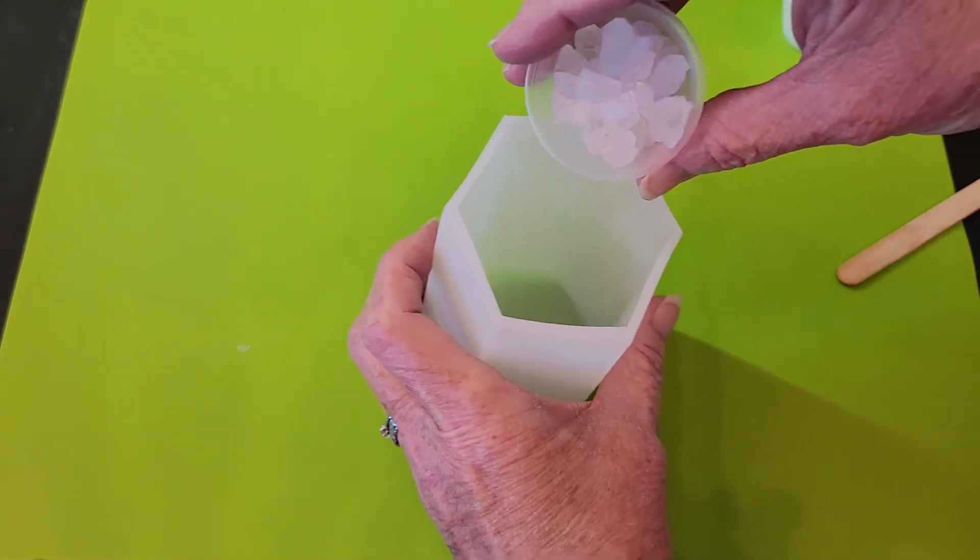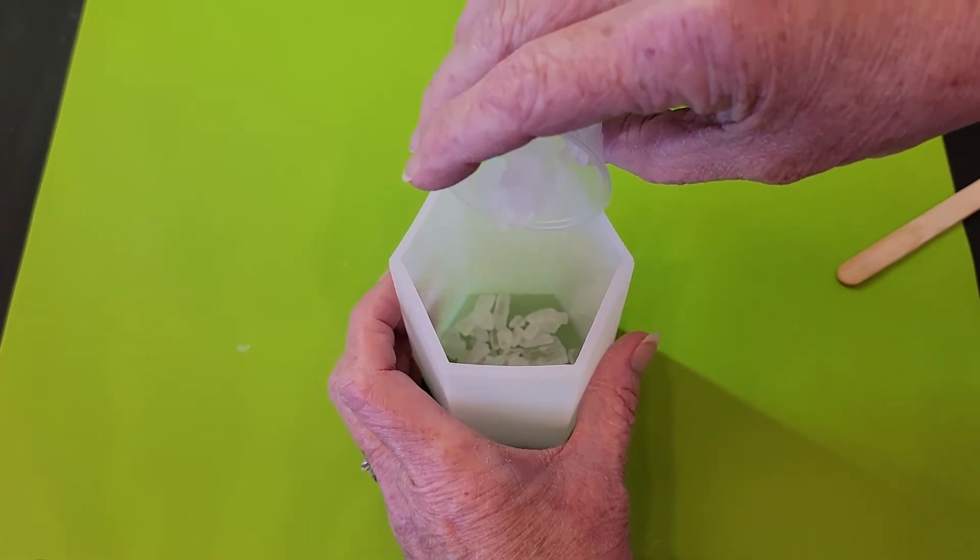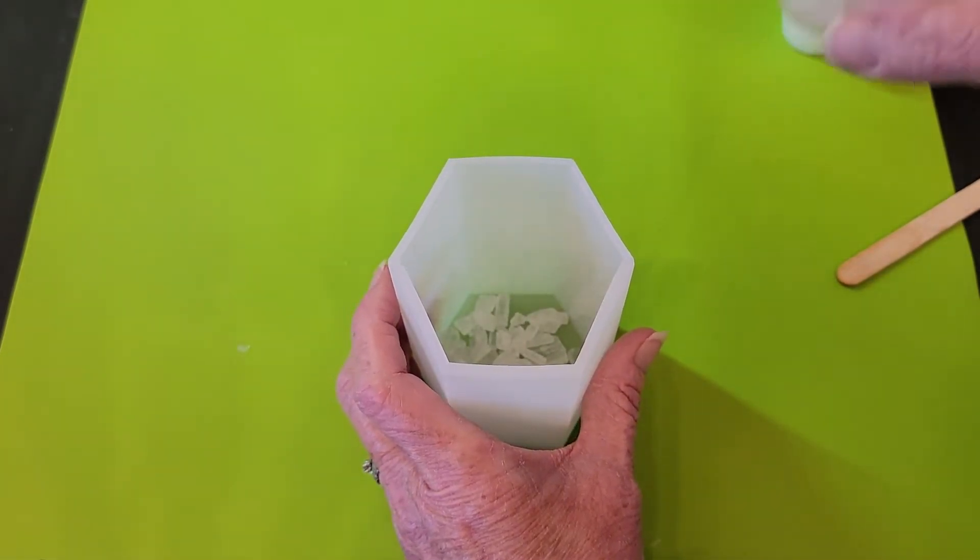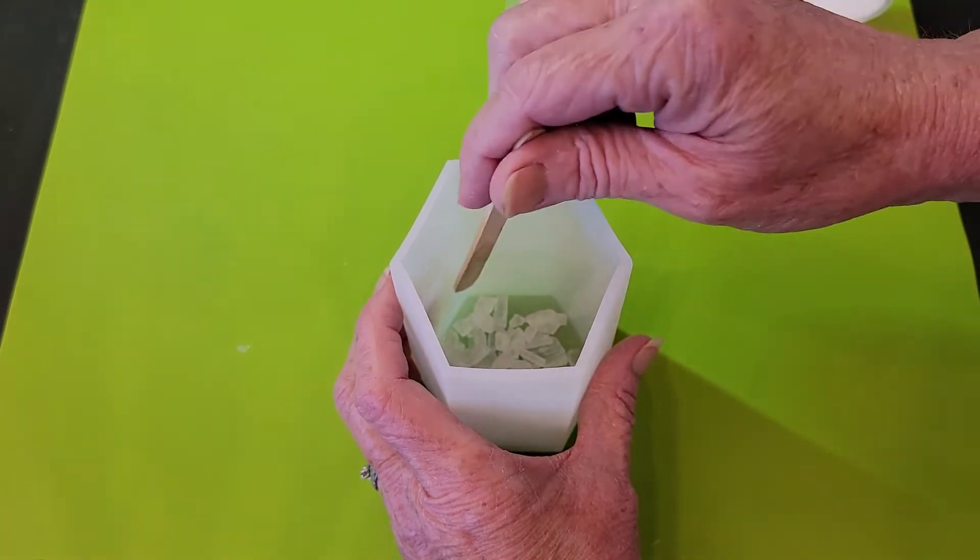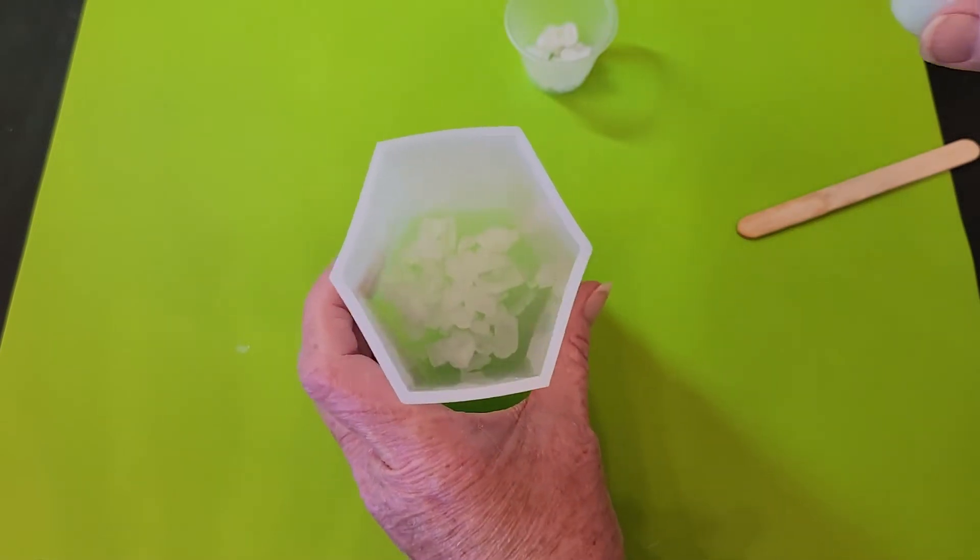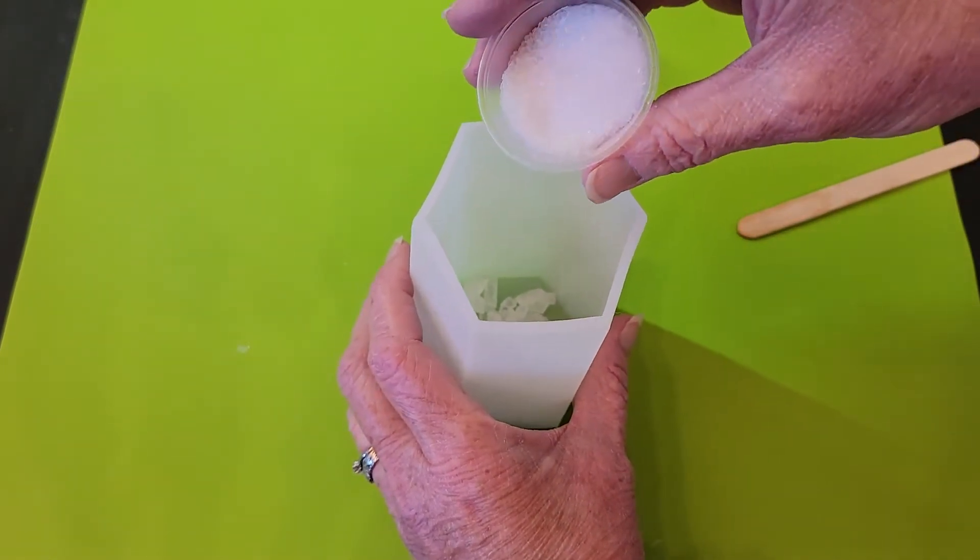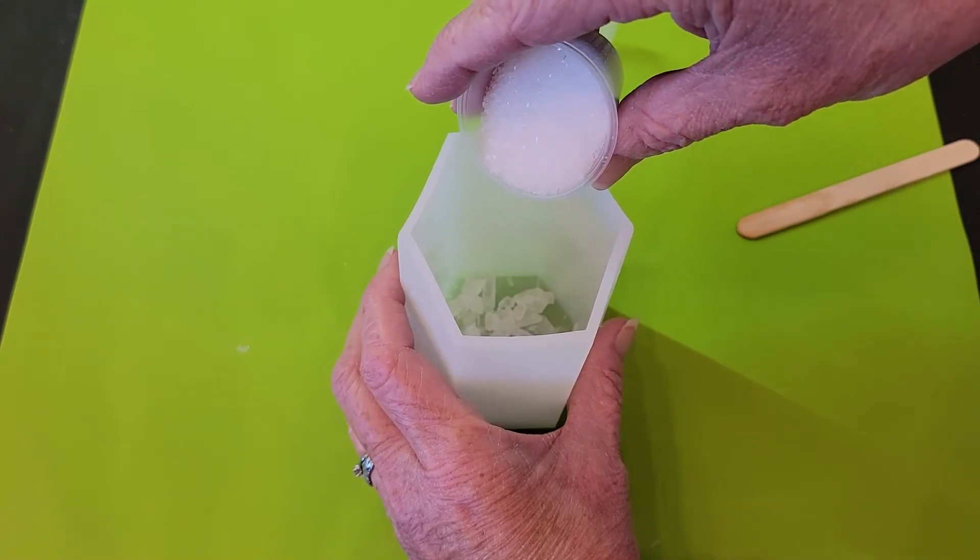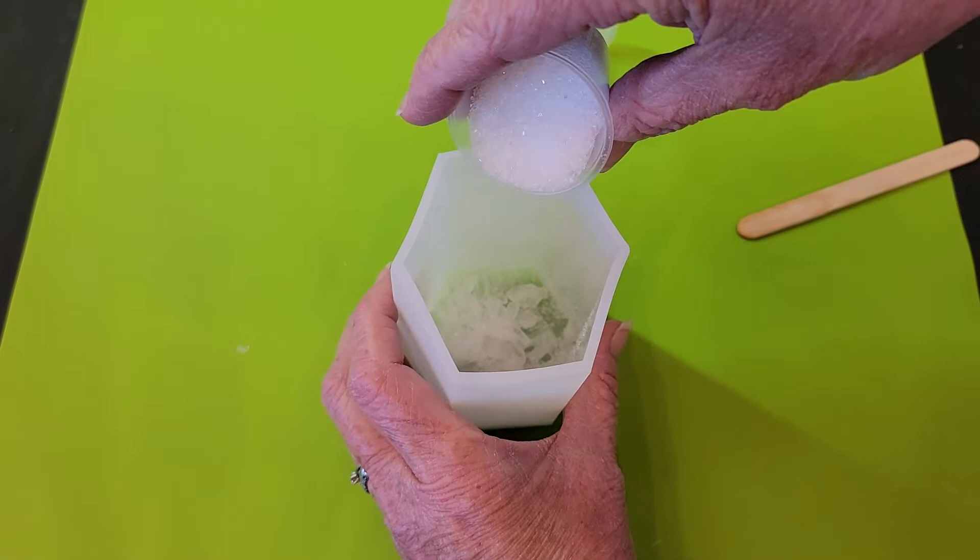But since it's an experiment, this is what I'm going to use. I've done coasters with Epsom salts and I absolutely love the effect. So I'm going to put the large salt in my mold first, and then I'm going to add the Epsom salt. I'm just going to cover it there.